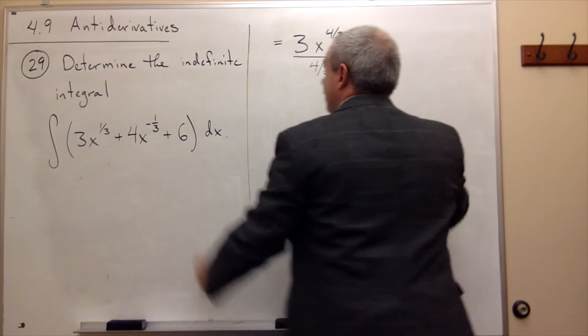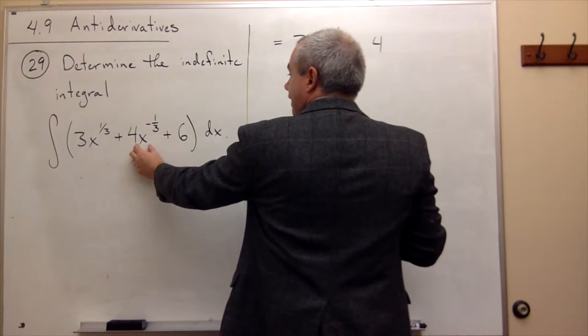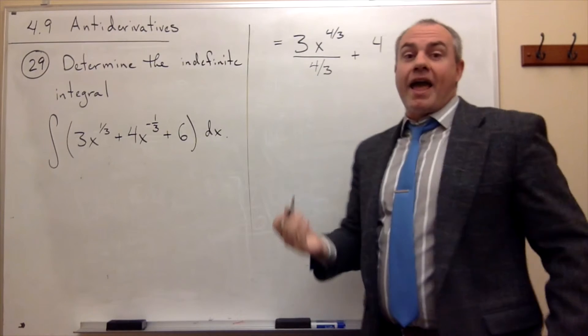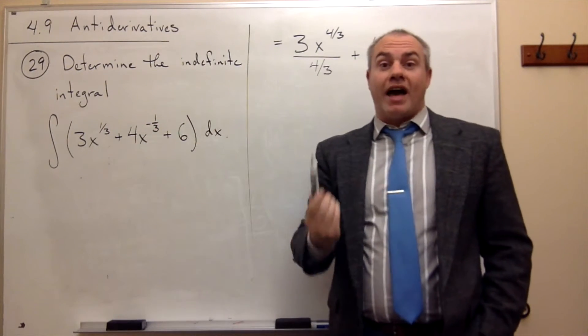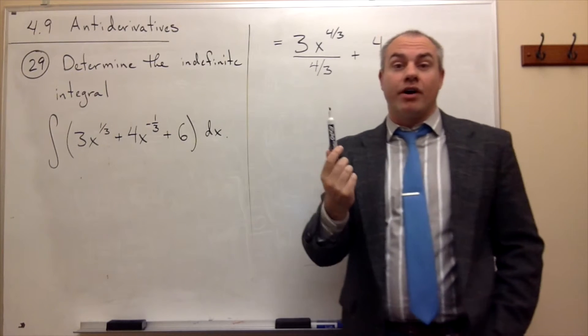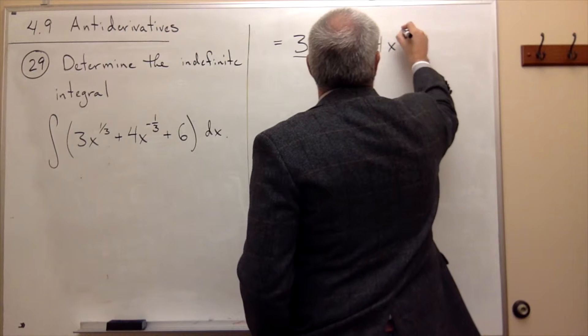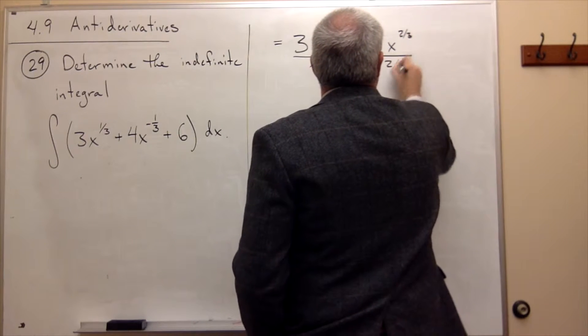For the second term, the 4 is constant, so I'll just leave it there. And then I have x to the negative 1 third. So I want to add 1 to the power. Right now the power is minus 1 third. So if I add 1 to negative 1 third, I get positive 2 thirds. So it's x to the 2 thirds. And then I divide by 2 thirds.